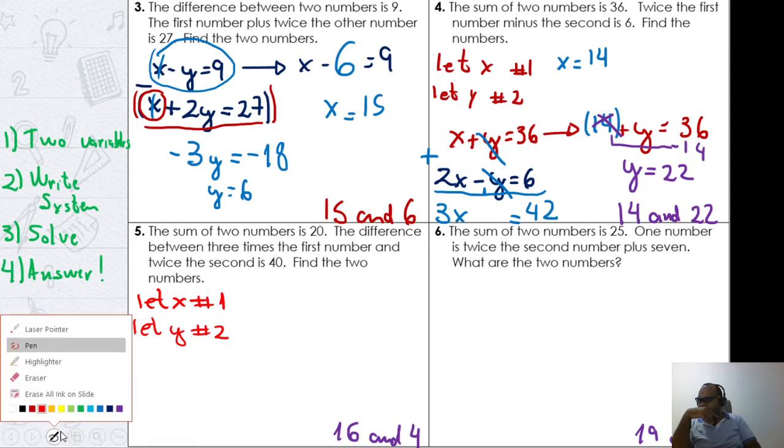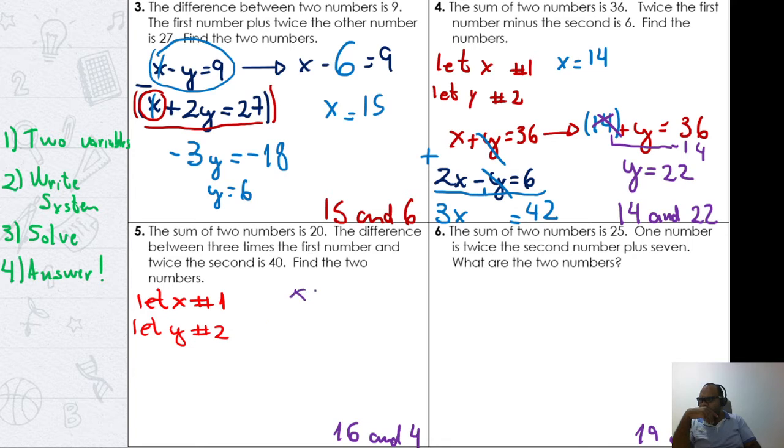The difference between three times the first number—that's 3x—and twice the second—2y. Here's my subtraction because it's the difference, and this equals 40. So 3x minus 2y equals 40.